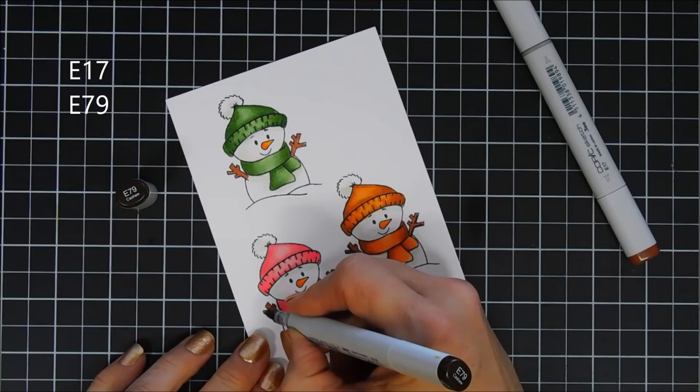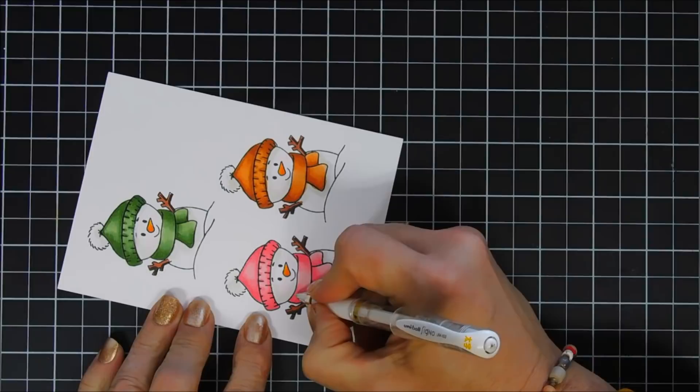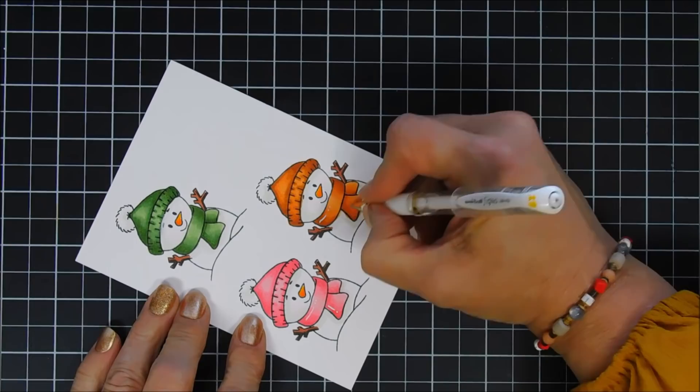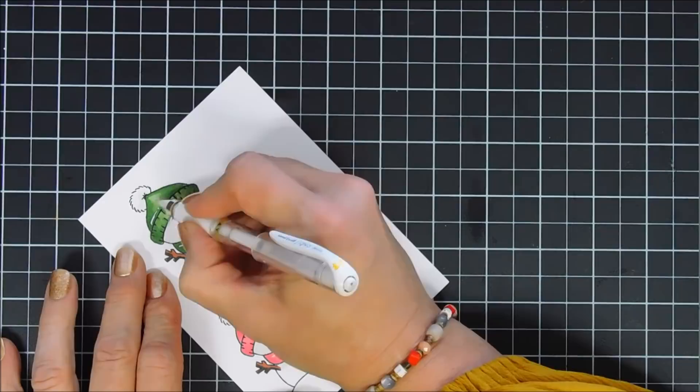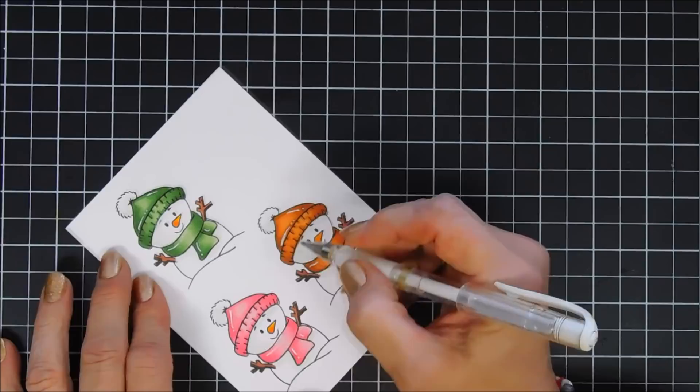Okay, coloring is just about done now. I'm just adding a little shading with my E79, ran out of music. Okay, now we're going to highlight our snowman's scarf and their little caps with my white gel pen. How I like to highlight is just follow along the image, the curve of the image, draw a line and then add a few little dots just for a whimsical look and it helps brighten up, especially when there's a lot of white area like that.